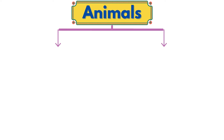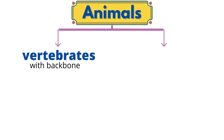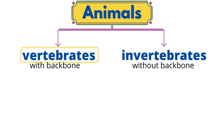Animals are divided into two main groups. Animals that have a backbone are vertebrates. Animals that don't have a backbone are invertebrates.